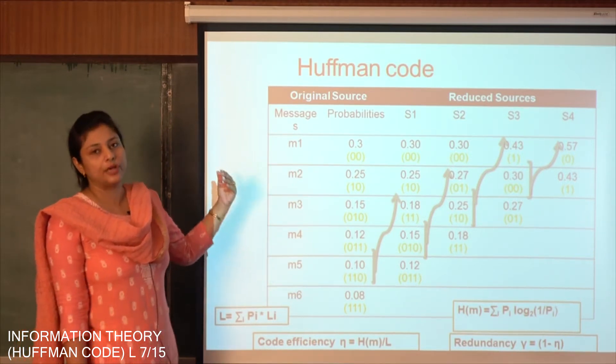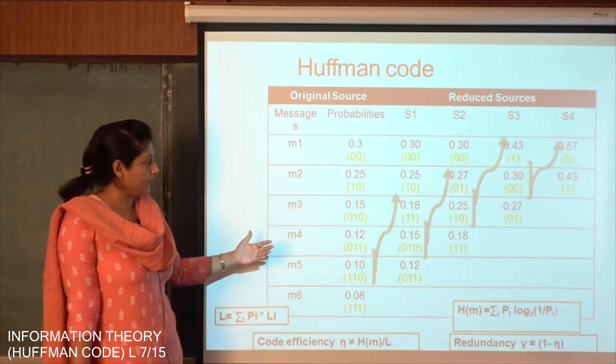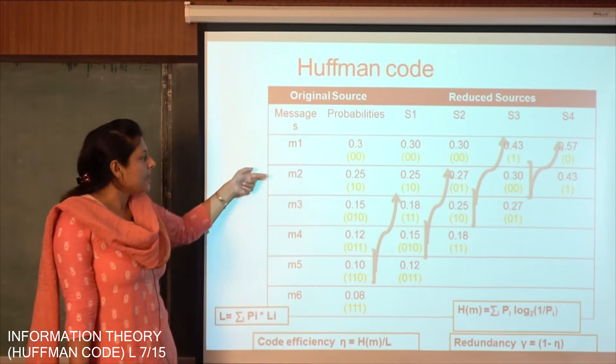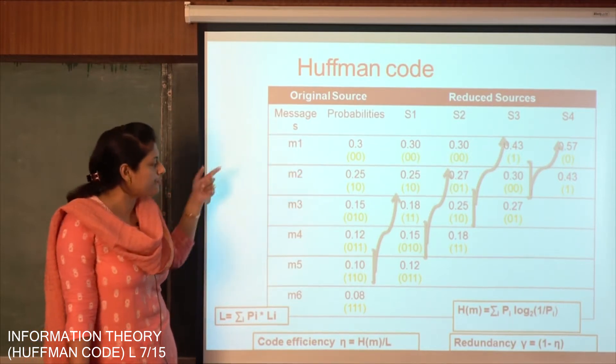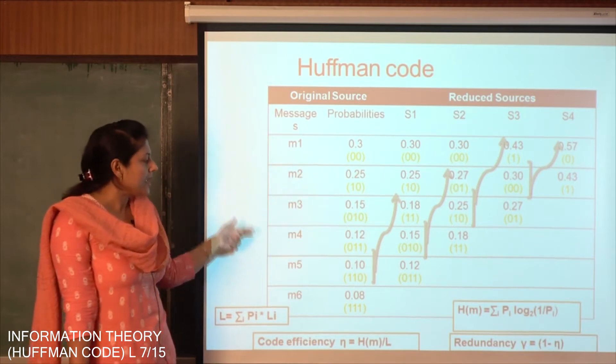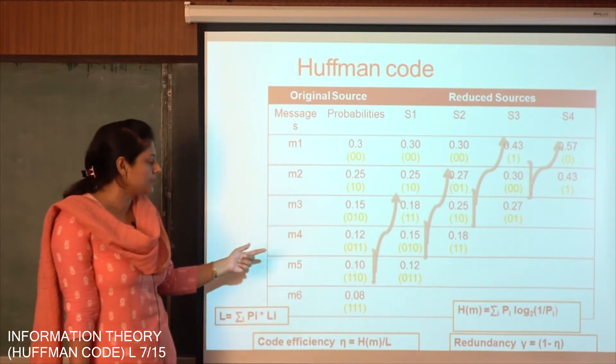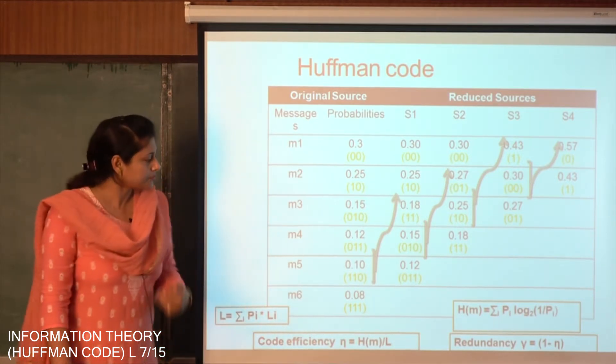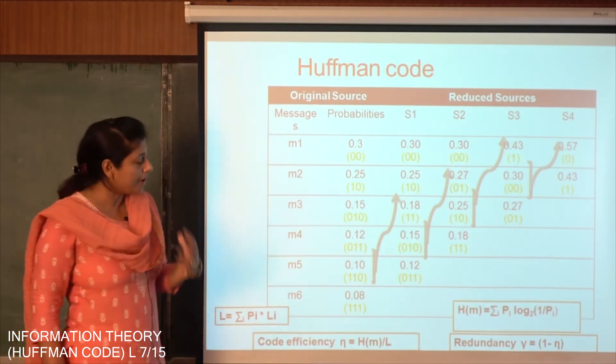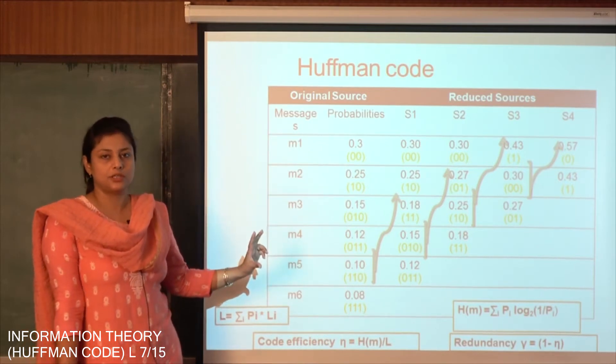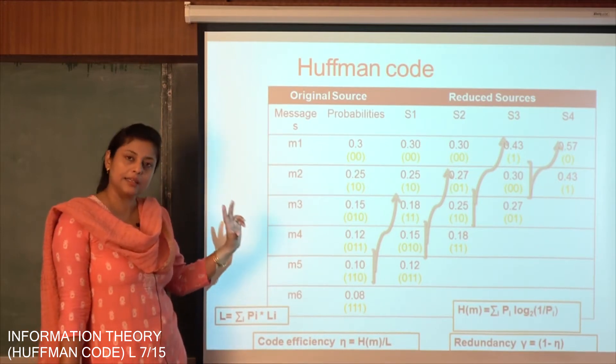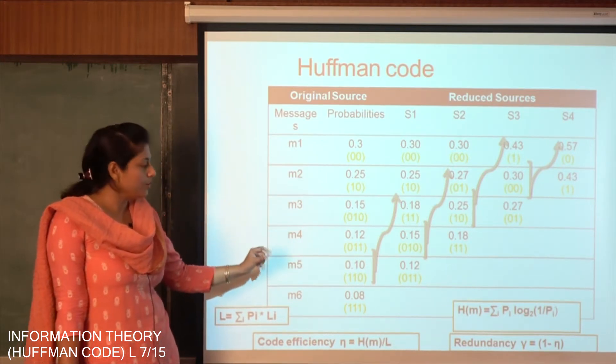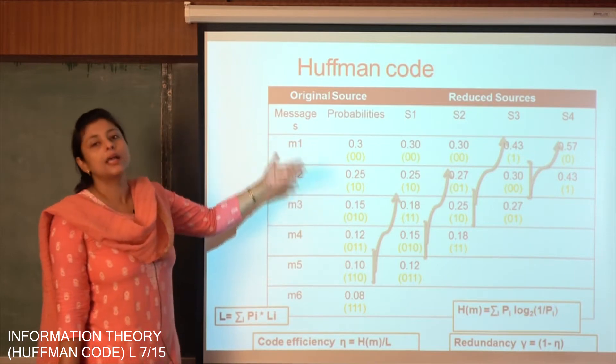If it is not given, then you have to arrange in descending order of probabilities. So M1 has a probability of 0.3, M2 has 0.25, M3 has 0.15, M4 has 0.12, M5 has 0.10 and M6 has 0.08. The idea is first take the last two probabilities which definitely are the least, take them and add them. Whatever value you get, you put it again in descending order.